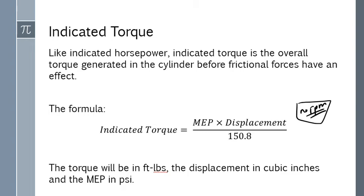The formula is very similar to the indicated horsepower formula but we don't have the rpm here. No engine speed. Remembering back to torque and horsepower a while ago, we said that torque does not depend on engine speed but horsepower does. So this makes sense. Because we're taking out that rpm, our number has changed on the bottom.